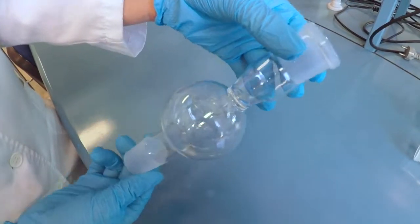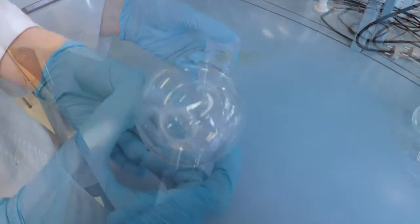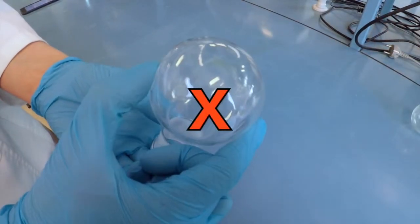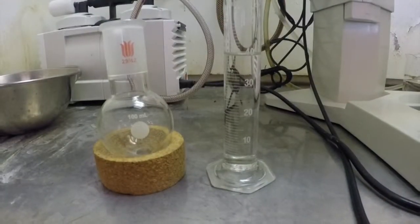All glassware should be checked for damage or cracks, and using improper glassware carries the risk of explosion. This includes the collection flask, the trap, and the round bottom glass being used.